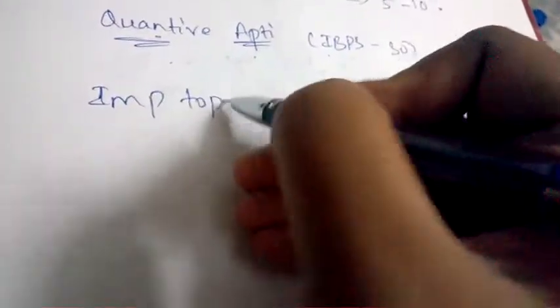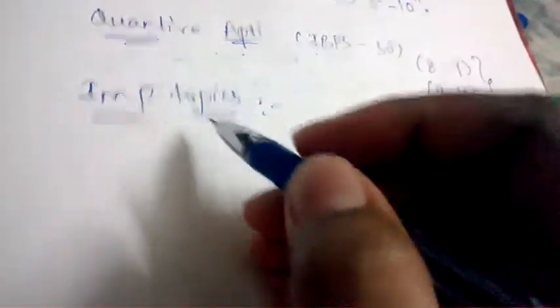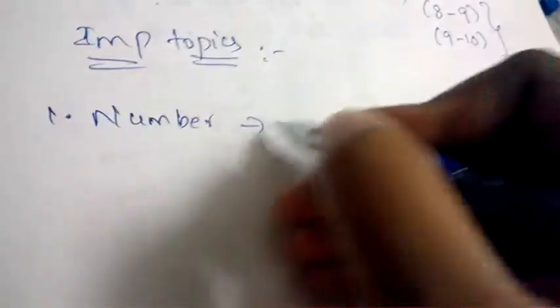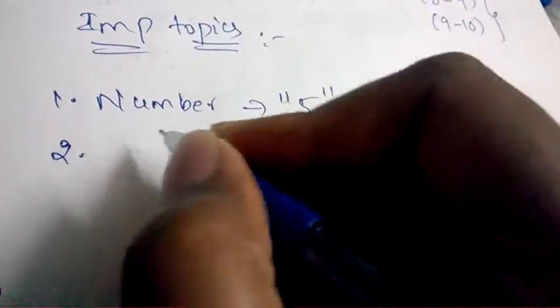Now I'll tell you the important topics and weightage of important topics of Quantitative Aptitude. Let's begin. The first most important topic in Quantitative Aptitude is Number Series. From Number Series, five questions will be asked in the question paper.